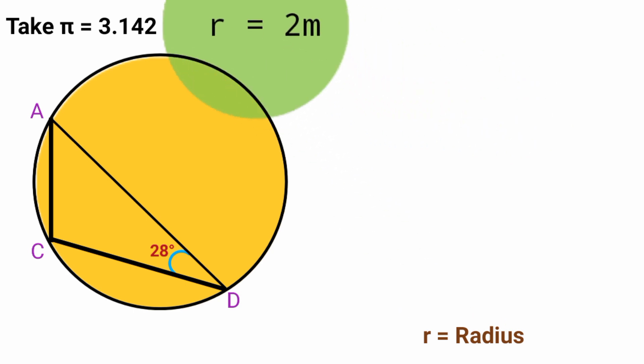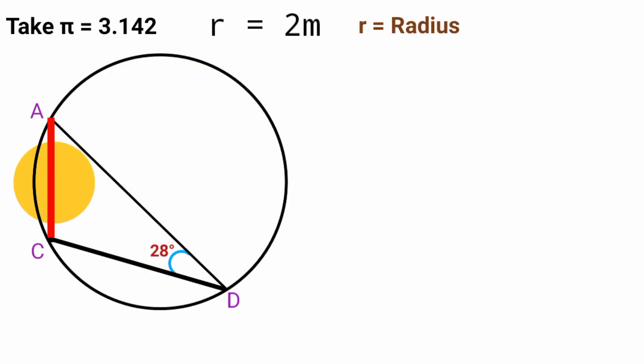So let's bring it here and keep it. Now coming back to this line here, line AC, to find its length. Since this angle here is 28 degrees and it's an angle subtended by this arc here to the circle, we can take the diameter of the circle from this point here, from this point of the arc.